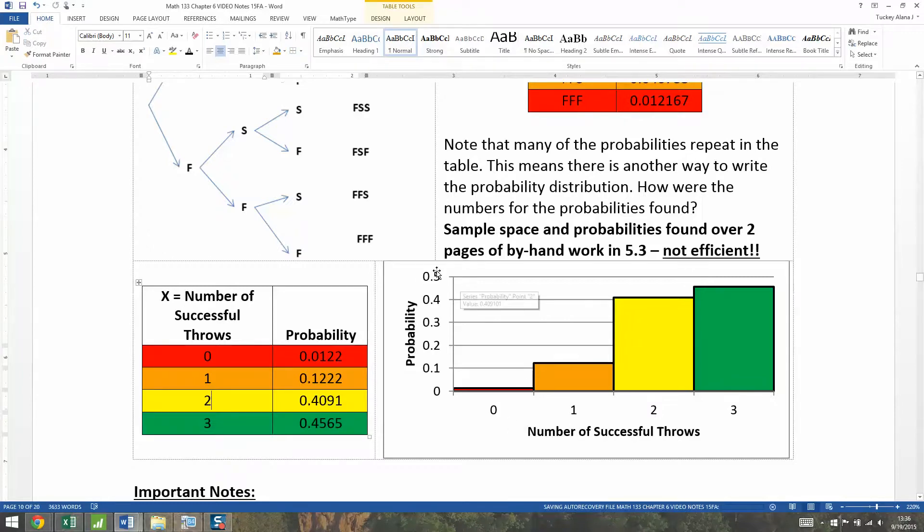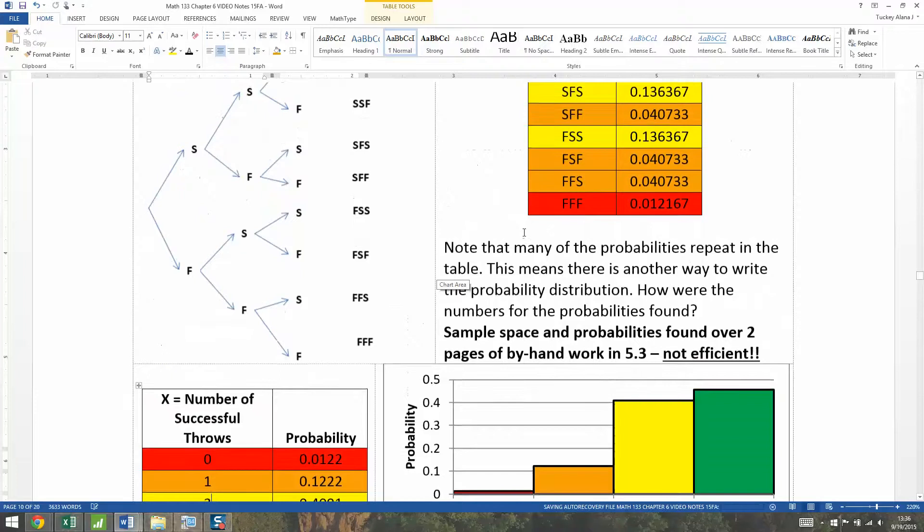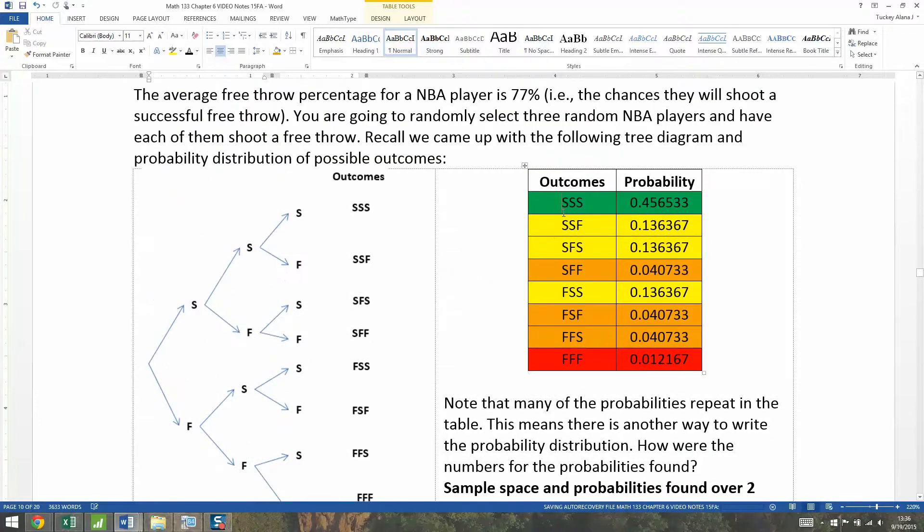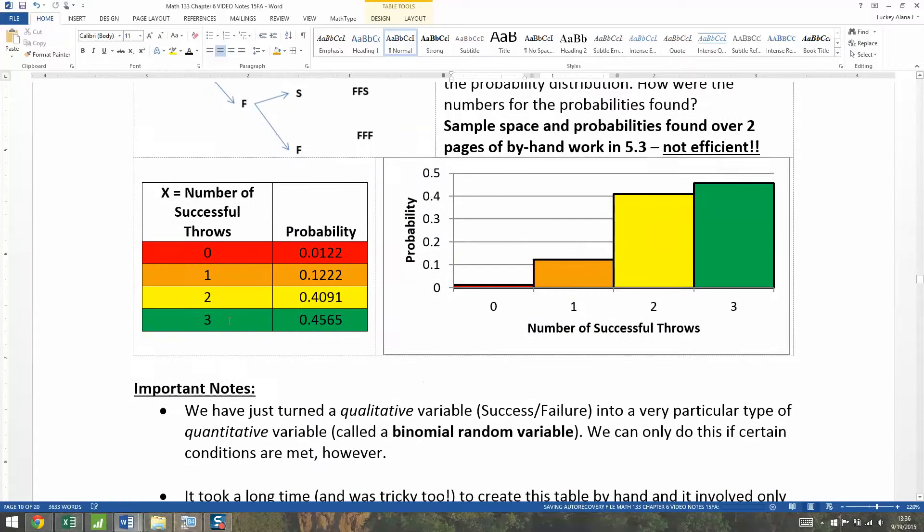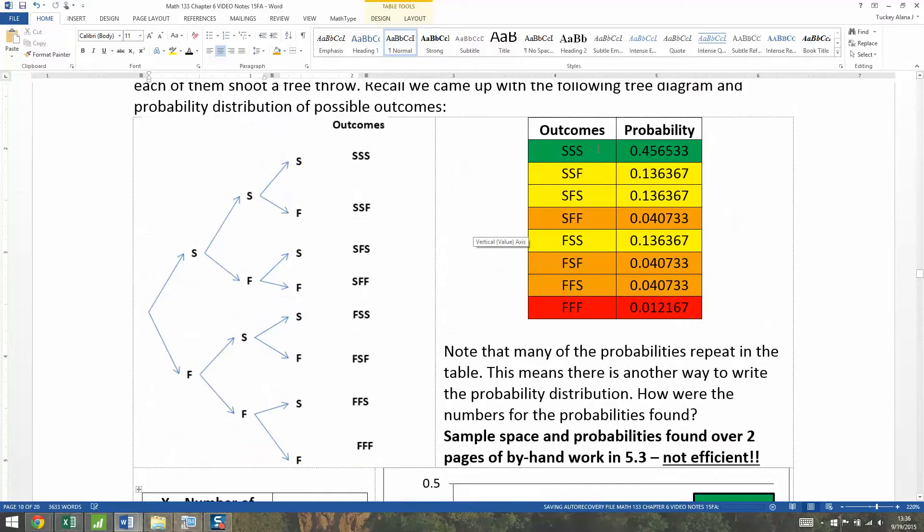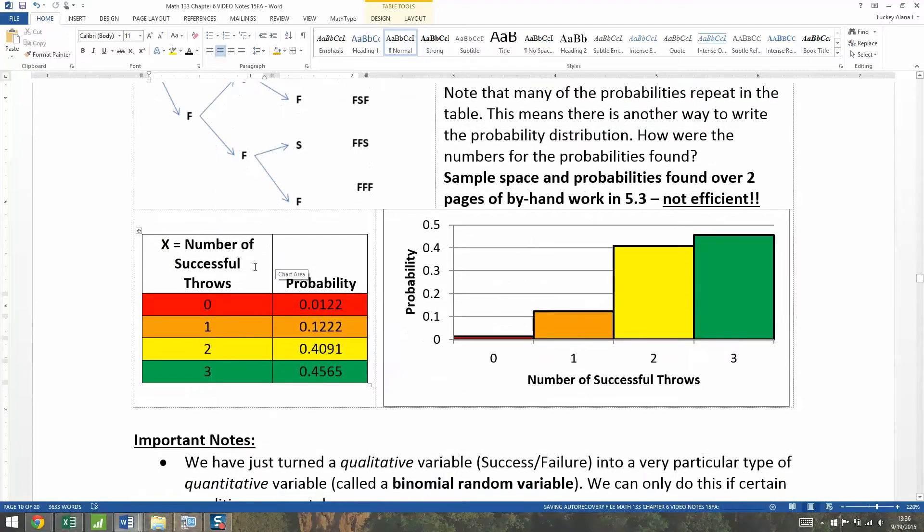Now realize the power of what we're doing here. We're taking something that is qualitative data - success, success, success, for example - and we're converting that into quantitative data, which is three. You're taking something that is a qualitative random output of an experiment and converting it into a very specific type of discrete random variable.